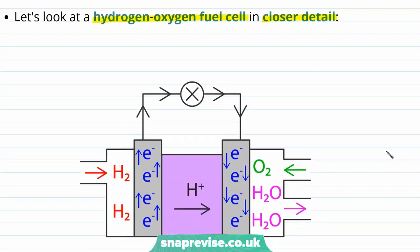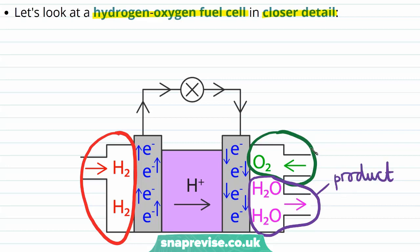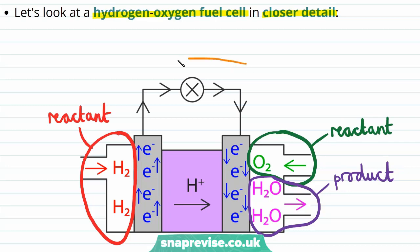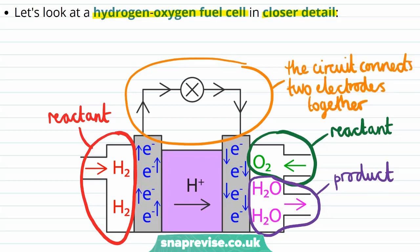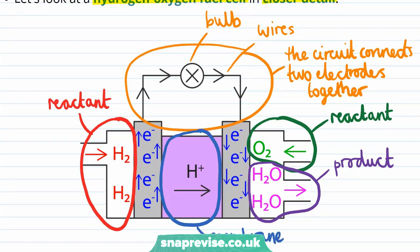Here we have a diagram of the cell. We provide hydrogen and oxygen to the fuel cell, and the reactions that take place within it produce water as a product — our reactants are therefore hydrogen and oxygen. The cell is connected to a circuit which connects the two electrodes together, made up of wires and a bulb, so the fuel cell is being used to power this bulb. In the centre of the fuel cell is a membrane which allows a transfer of H⁺ ions. We can also identify the flow of electrons through the fuel cell and the external circuit — produced in the chemical reactions — and it's the flow of these charged particles that leads to the production of a current.